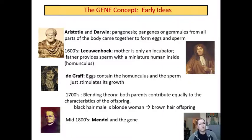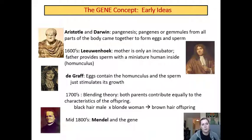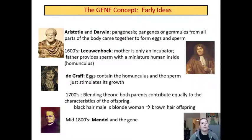It took the scientific community a little while to catch on to how genes worked and how they were passed, or even what genes were. In 1868, Darwin proposed the Pangenesis Theory, which said that pangenes, or gemmules — basically pieces of your body — would collect and form into eggs and sperm, and that would be transferred to your offspring.